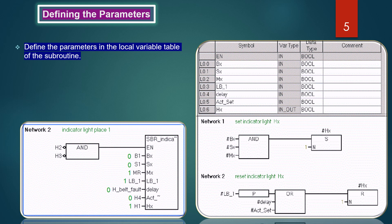Structuring with subroutines divides your program into smaller, more manageable units. This is beneficial when you want to test or troubleshoot your program — when you work with a smaller unit it is easier to test individual units as well as the entire program, and you can troubleshoot faster. You use the automation system more effectively when you only call the units you need and don't execute the entire program in every cycle.